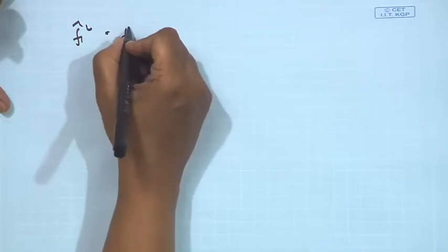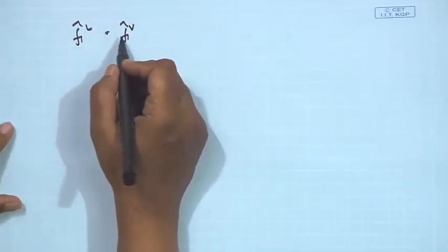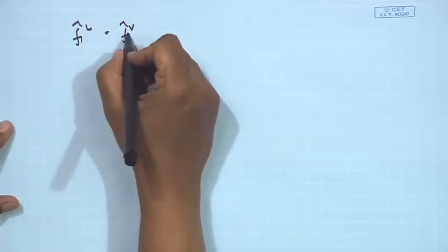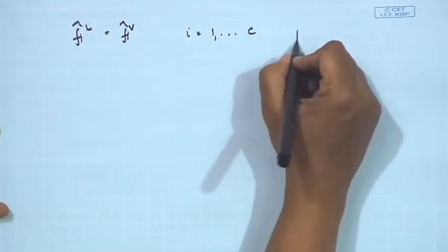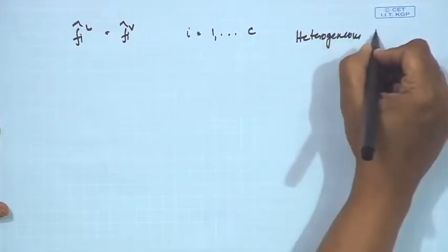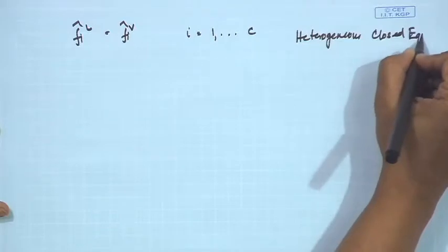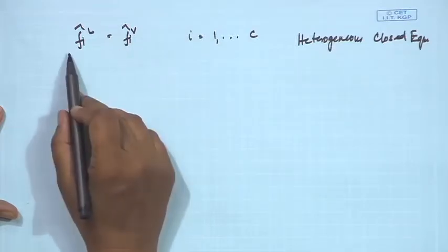For phase equilibrium, the basic equation is that the fugacity of any component i is the same in the vapor phase and the liquid phase. This is applicable for any component i, where i can range from component 1 to component c. For now, we are considering a heterogeneous closed system comprising two homogeneous open systems — one is the liquid phase and the other is the vapor phase — each phase comprising c number of components. For each component i we have one such equation, giving us c equations in total.